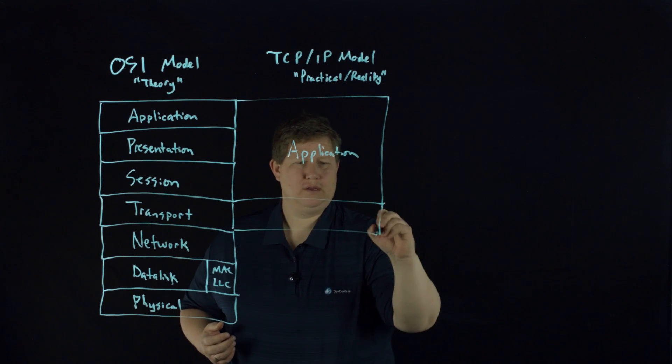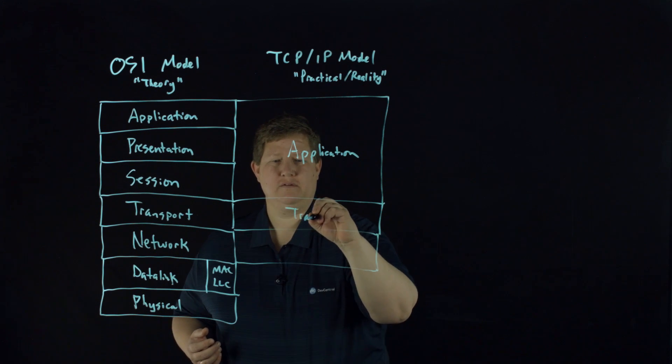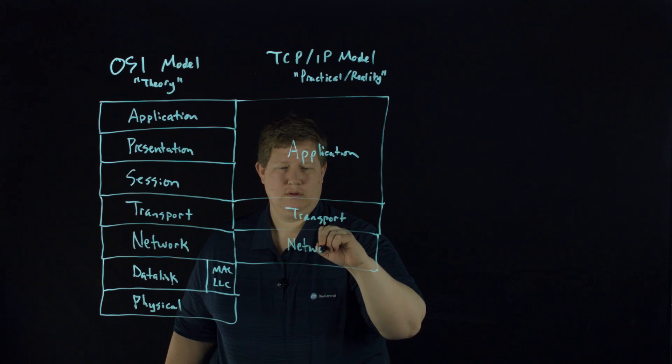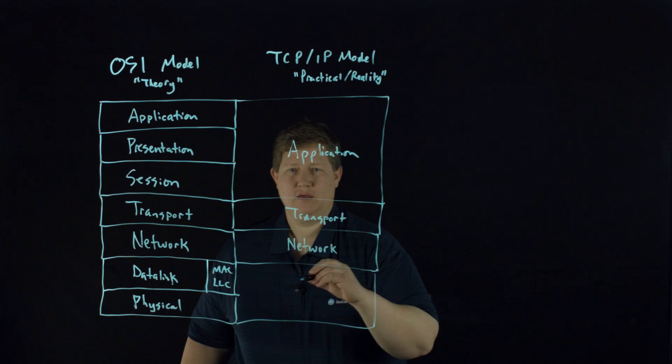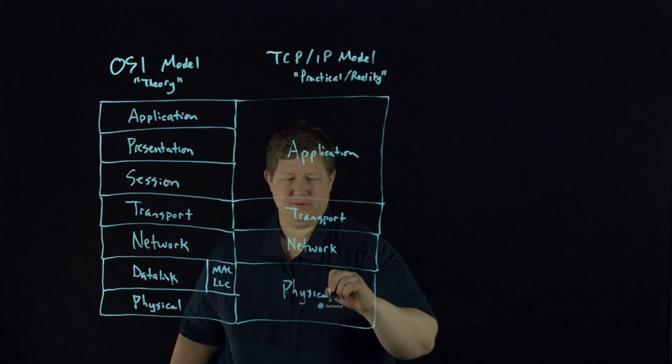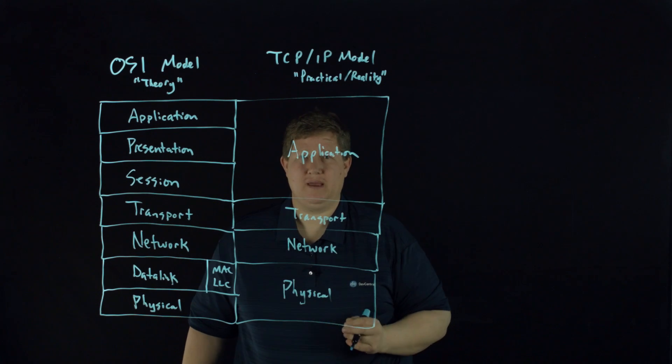Transport and network are the same between the two models. And then you have a combined physical layer here for the TCP/IP model. So, seven layers OSI and four layers TCP/IP.